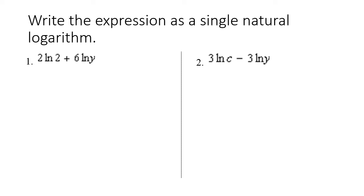Here we're going to write the expression as a single natural log. Step one tells us to use the power property — property number five — so my two and my six go from being coefficients to being exponents. We have natural log of two squared plus natural log of y to the sixth.